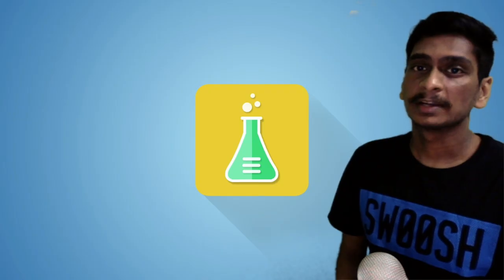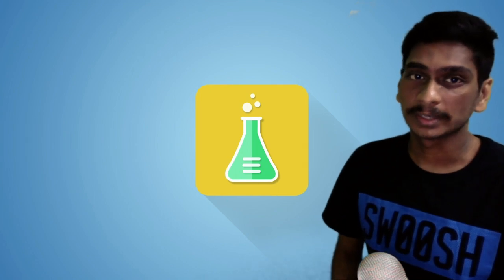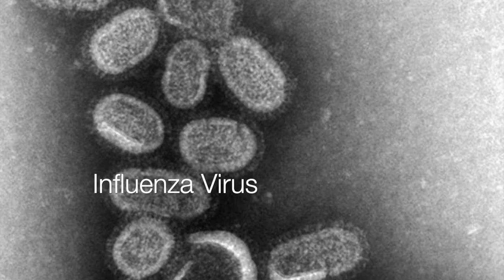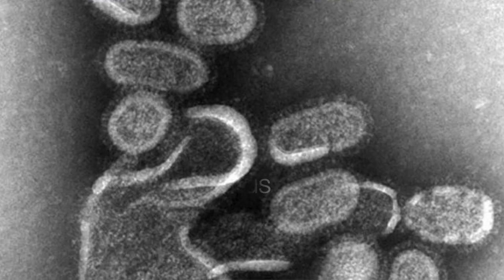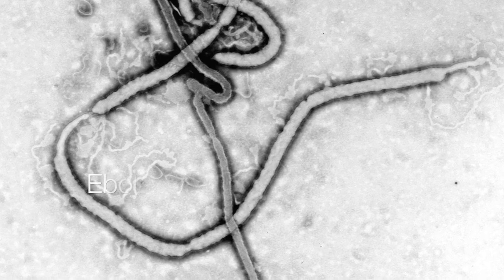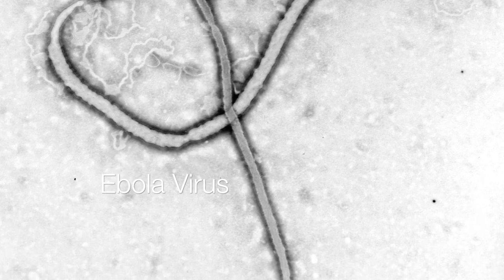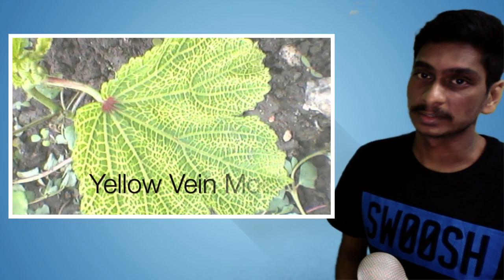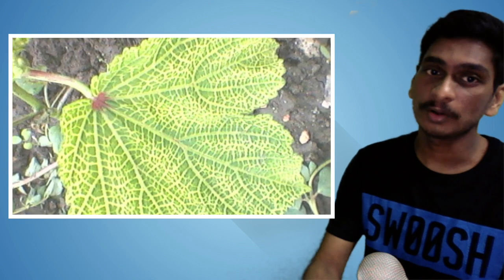And here comes the chickenpox virus where you can notice the lipid envelope, and here's the most common influenza virus, and then the deadly, deadly ebola virus. Viruses can also cause diseases in plants like yellow vein mosaic in okra.